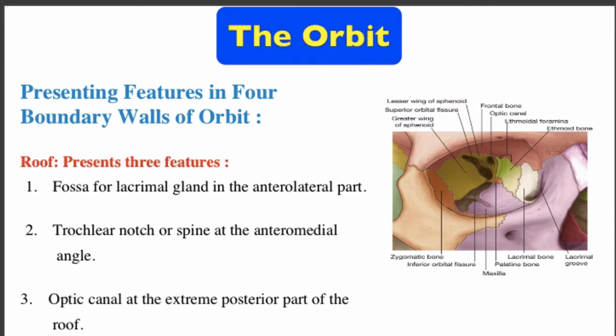The roof of the orbit presents three features. First: a lacrimal fossa for the lacrimal gland in the anterolateral part. Second: trochlear notch or spine at the anteromedial angle. Third: the optic canal at the extreme posterior part of the roof.